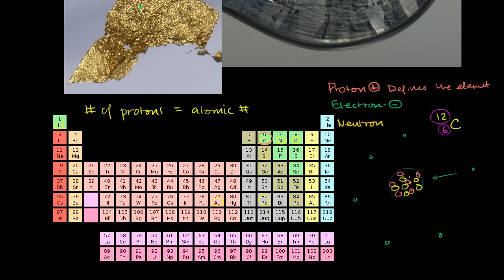It starts to get into very strange physics once we talk about what an electron is actually doing. It has enough energy that it doesn't just fall into the nucleus. And so, carbon-12 is defined by its number of protons. Oxygen is defined by having eight protons. Electrons can interact with other electrons or be taken away by other atoms, and we can start to predict how atoms of one element react with atoms of another.